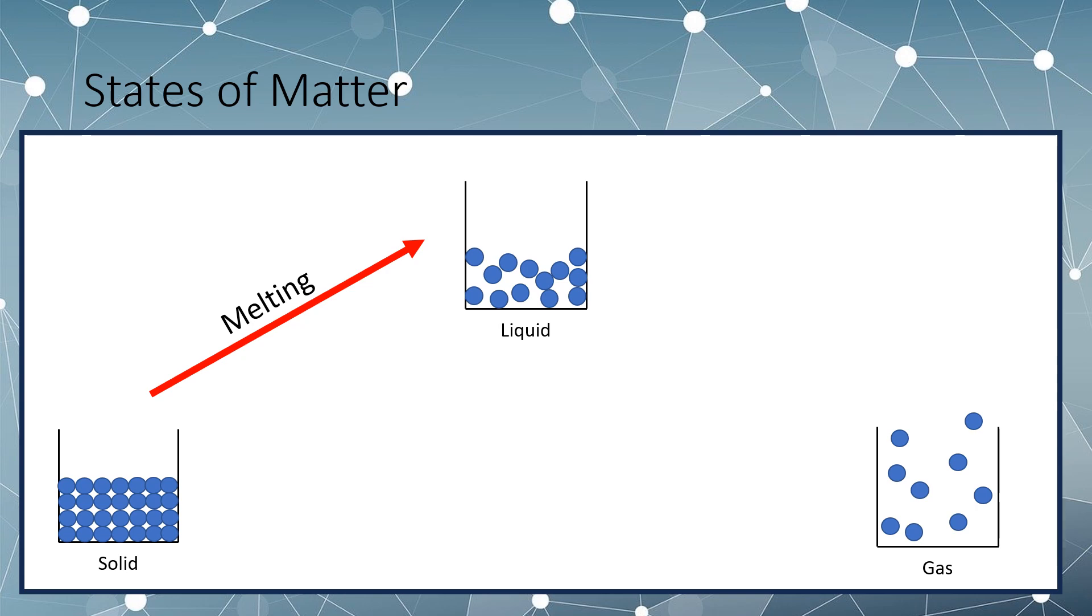This can also occur through evaporation, which is the same basic process, but is just another term for the same process as boiling. Overall, we classify this in the fancy term of vaporization. This covers all different ways the liquid can transform into a gas, through the increase of energy in the molecules.